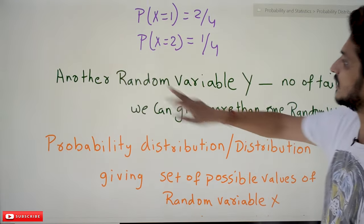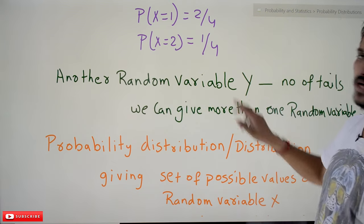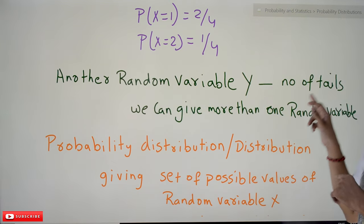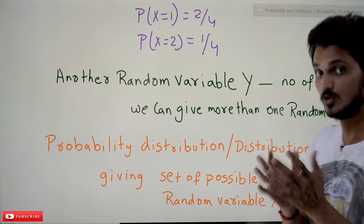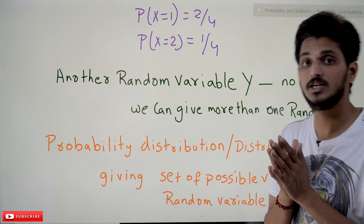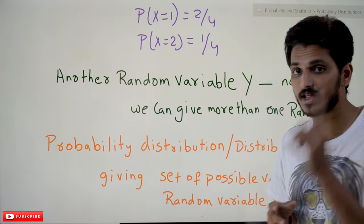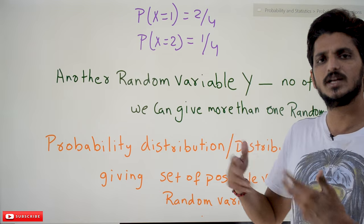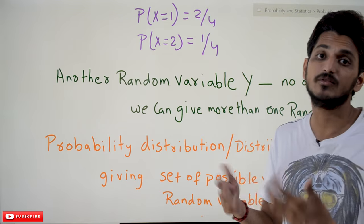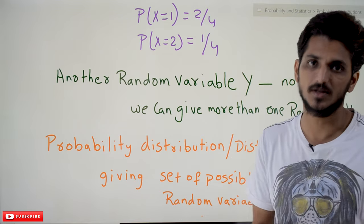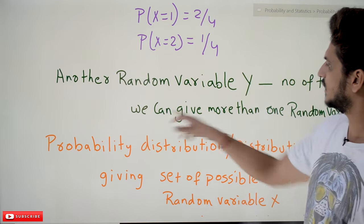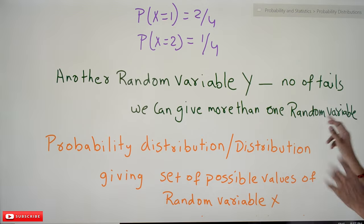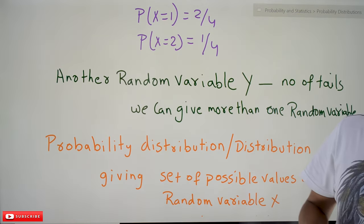Now we can also define another random variable Y as the number of tails. The key point to understand is that it is not necessary to mention only one random variable in a random experiment — you can define any number of random variables for a given random experiment.